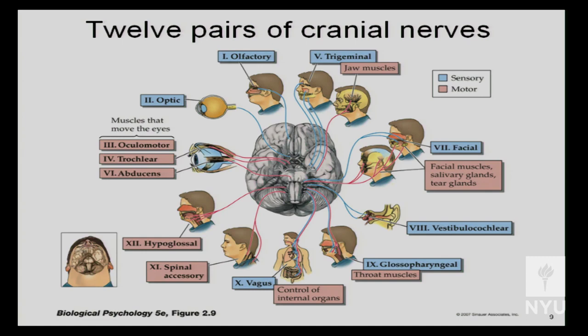Nerves 3 and 4 are both pure motor nerves. Cranial nerve 3, the oculomotor nerve, controls eye movement. Cranial nerve 4, the trochlear nerve, also controls eye movement in different directions. You don't have to know exactly how they control the eyes, but just know both are pure motor and dedicated to eye movement.